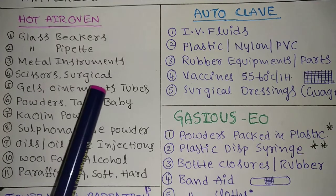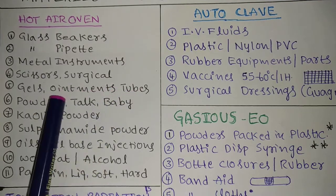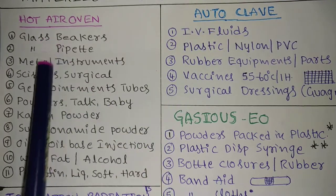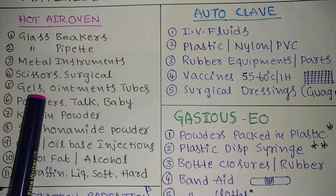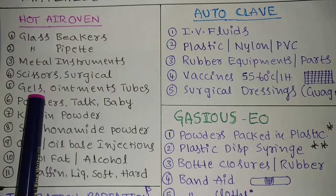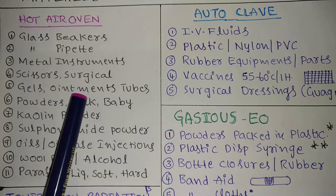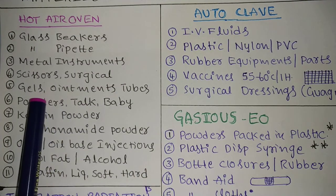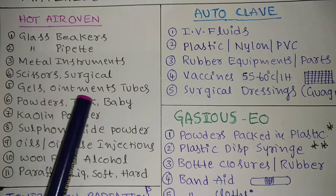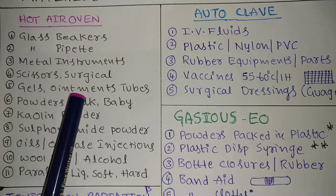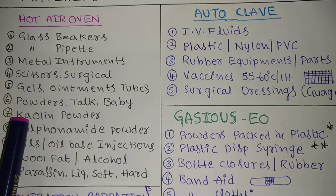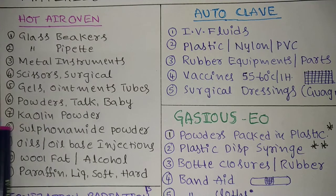Gels and ointments — ointment tubes also should not go into the autoclave; use the hot air oven only. Because for gels and ointments, if they absorb moisture or water, there is a chance of changes in the formulation — they will liquefy. That's why the hot air oven is preferable for gels and ointments.